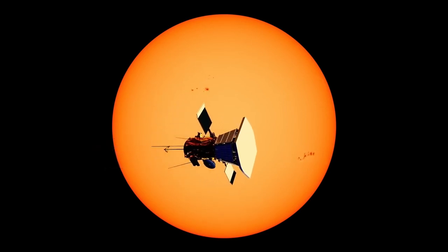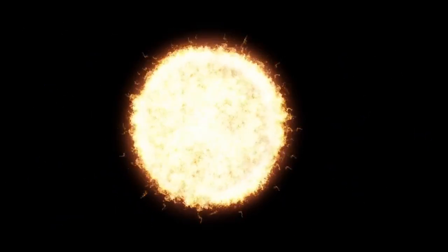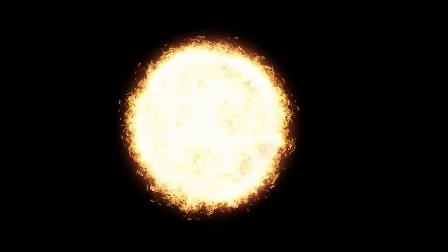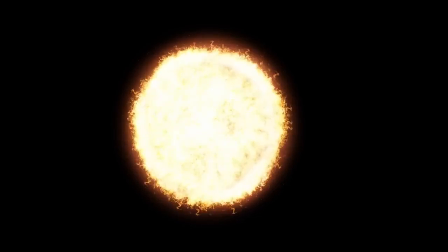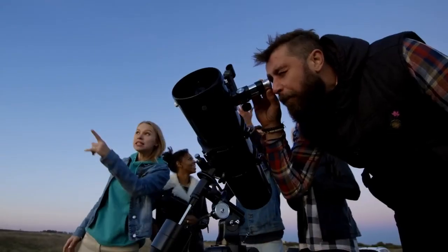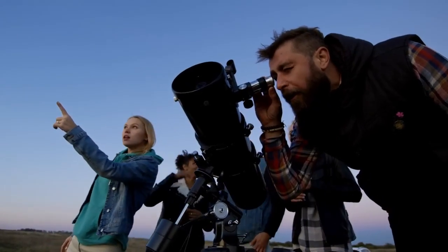But it didn't behave like anything from our neighborhood. Calculations revealed it was on a hyperbolic trajectory—a path that doesn't loop back around the sun, but flies straight through. That meant one thing: it had come from outside the solar system. This was only the third time in history that humanity had caught an object from deep space. Scientists quickly gave it the name 3I Atlas, the third interstellar, following the historic cases of Oumuamua in 2017 and Borisov in 2019.